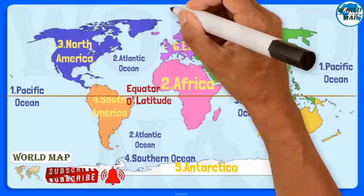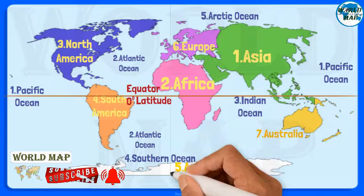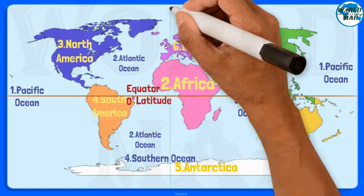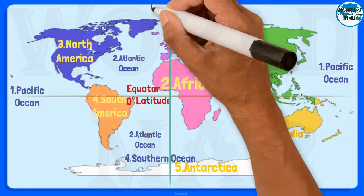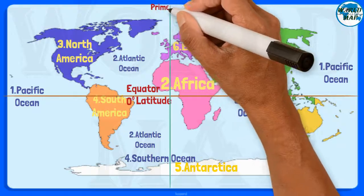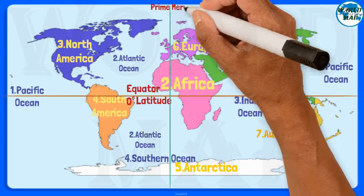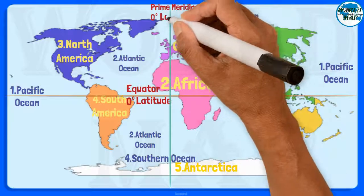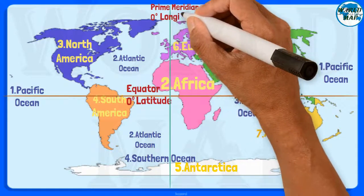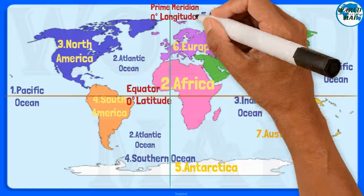The prime meridian is the line of zero degrees longitude, the starting point for measuring distance both east and west around Earth.